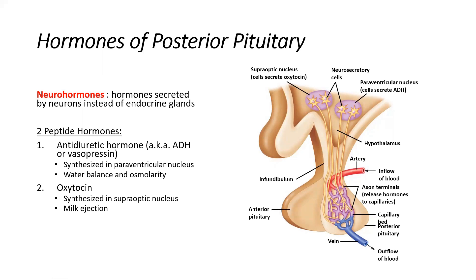To underscore two important things: the regions of the hypothalamus where these hormones are made — the paraventricular nucleus, which makes ADH, and the supraoptic nucleus, which makes oxytocin. These hormones travel via their neurons — neurohormones — projected via these neurons and released from the axon endings in the posterior pituitary. It is a misnomer to think the posterior pituitary makes hormones; it doesn't make any hormones, it only releases them, and they are actually made up in the hypothalamus.